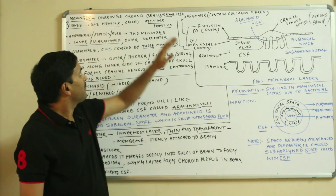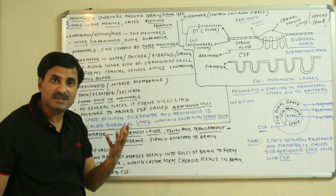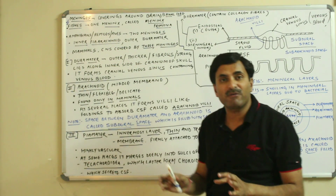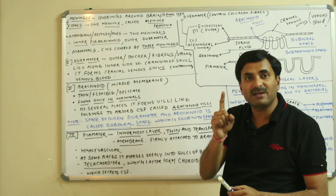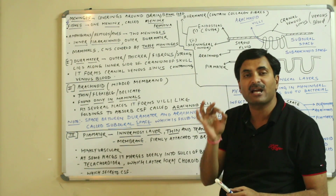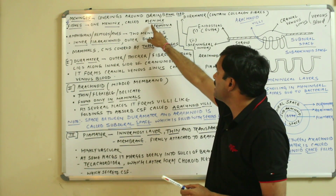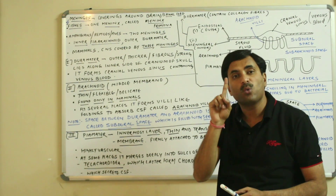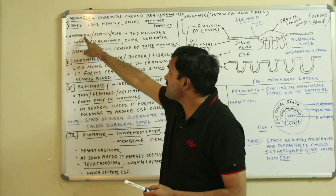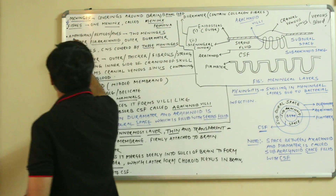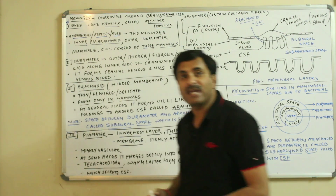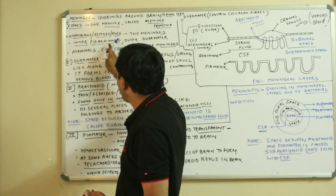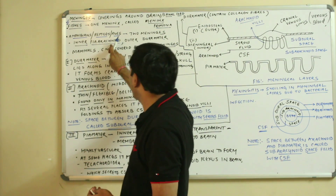The number of meninges differs in different organisms. In fishes, there is only one meningeal layer around the brain, called the meninx primitiva. In amphibians, reptiles, and birds, there are two meningeal layers: the inner one is called the pia-arachnoid, and the outer one is called the dura mater.